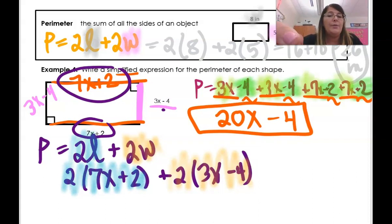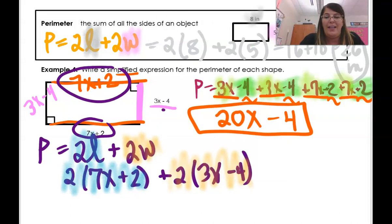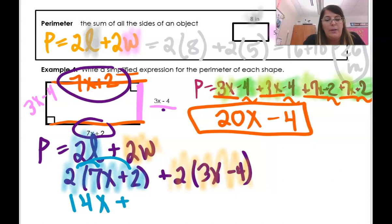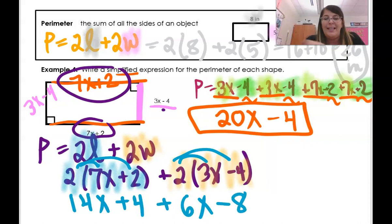So when I do this, I better get the same answer. I know what the answer is. It better be 20x minus 4. Let's work it out and see. Here, I'm distributing. Look at this. It's an application of the distributive property. 14x, 2 times 2 is 4. Now, I've got to do this part. Distribute. 2 times 3x is 6x. 2 times minus 4 is minus 8.